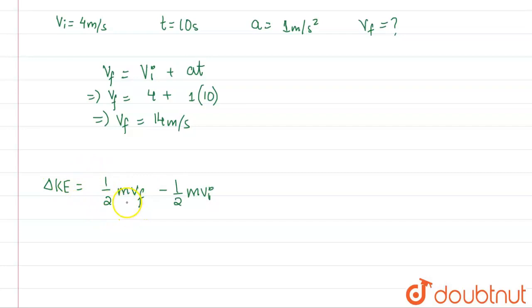So this will be equal to half into m, we will take outside, so m by 2 will take outside: v_f squared minus v_i squared. So v_f square, this will be 5 by 2, then 14 squared minus 4 squared.